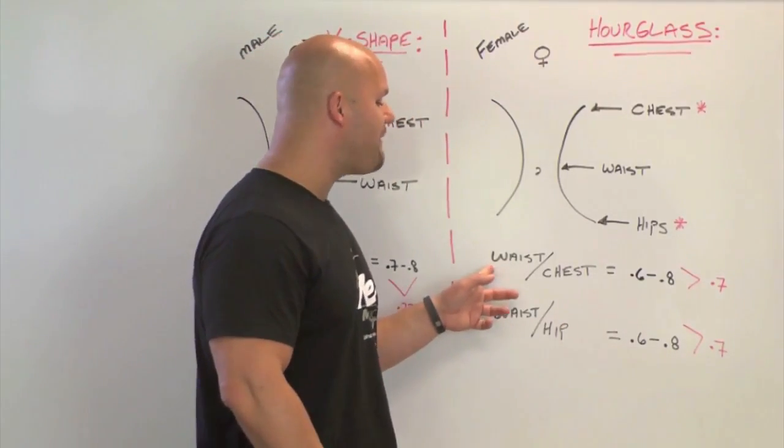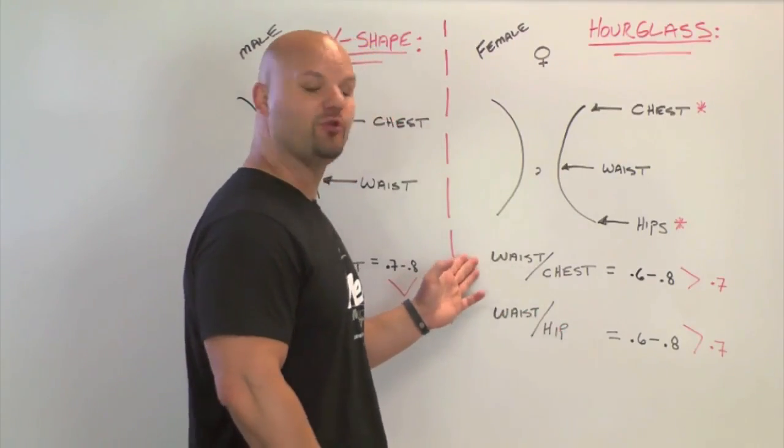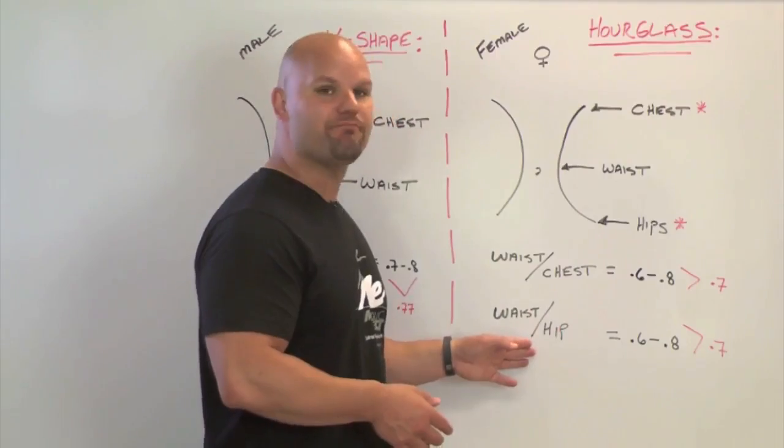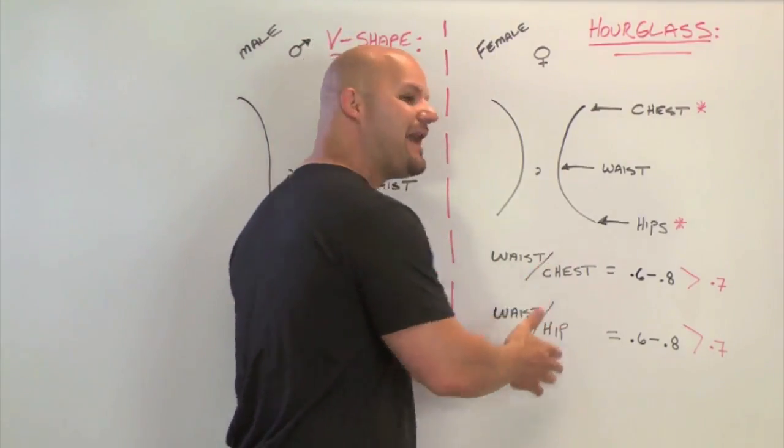You're going to take the waist measurement and divide it by the chest measurement. There's that apple number again. And you're going to take the waist measurement and divide it by the hip measurement. And this really is the pear measurement.